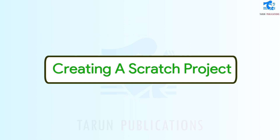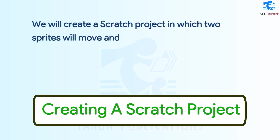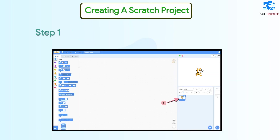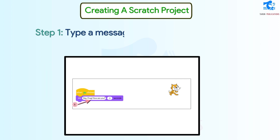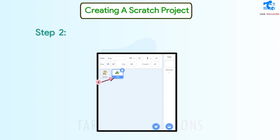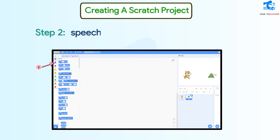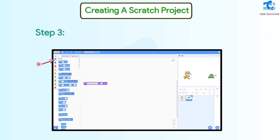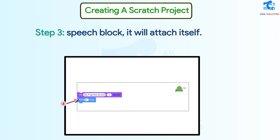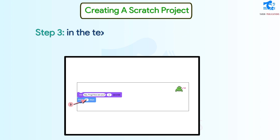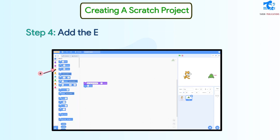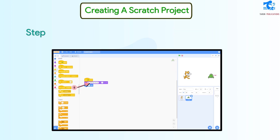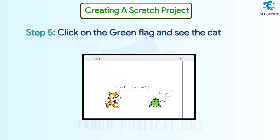Creating a Scratch Project. We will create a Scratch project in which two Sprites will move and talk to each other. Step 1: Click on the Cat Sprite. Drag the Look Speech Bubble block to the Coding Area and type a message in the text box. Step 2: Click on the Frog Sprite. Drag the Look Speech Bubble block to the Coding Area and type a message in the text box. Step 3: Drag the Motion Block to the Coding Area. When you bring this block below the Speech block, it will attach itself. Change the number of steps to 20. Step 4: Add the Event block on to the top of the script. Step 5: Click on the Green Flag and see the Cat and Frog talk and move.